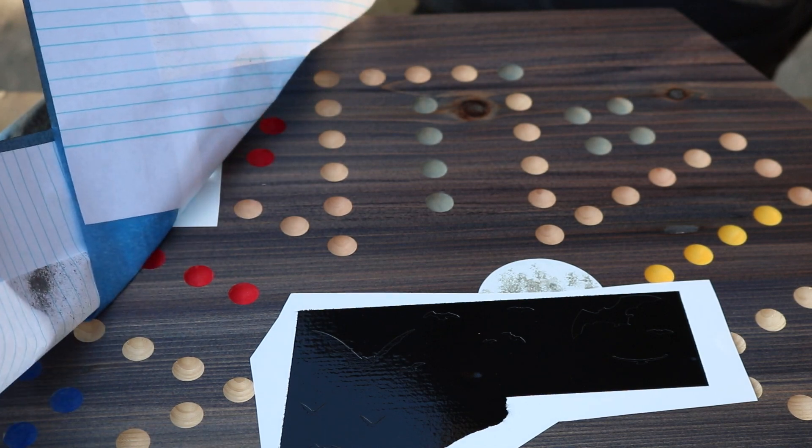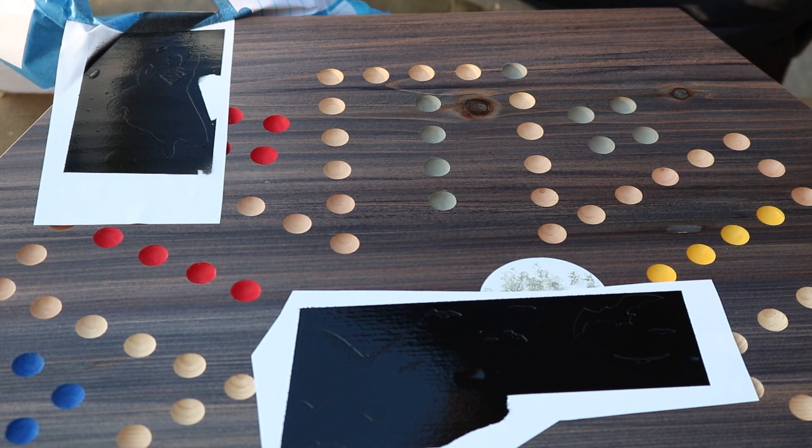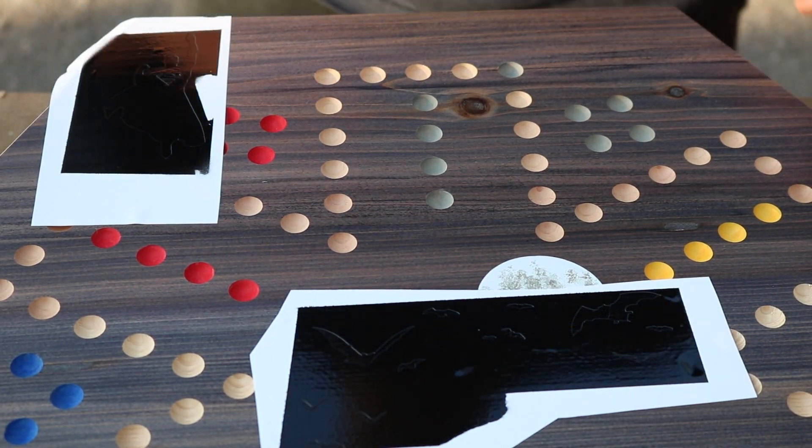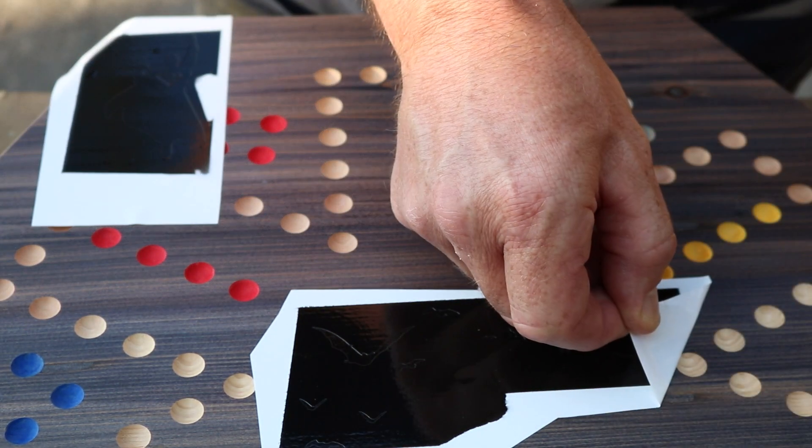You'll see here just how crisp the lines are of the moon first of all, and then as I peel back these two stencils. Just take a look at what you can do properly preparing the surface and using these vinyl stencils with the Cricut.